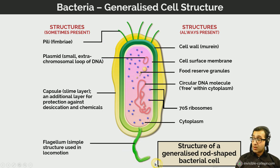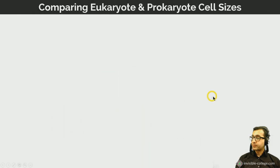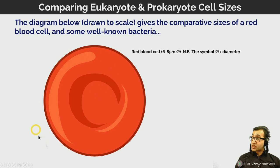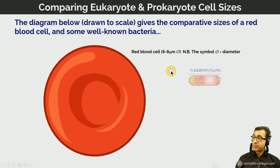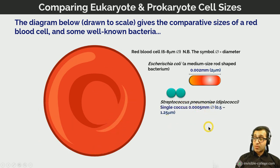The term flagellum is singular; flagelli is plural. In comparison, the red blood cell — one of the smaller eukaryotic cells — is 6 to 8 micrometers in diameter, whereas an E. coli bacterium, a medium to slightly larger rod-shaped bacterium, is much smaller even than one of the smallest eukaryotic human cells. Streptococcus pneumoniae is smaller still.